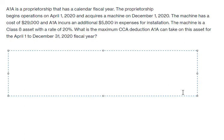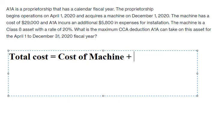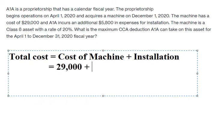The first thing we need to find is the total cost. That should be the cost of the machine plus installation. So we have $29,000 plus $5,800, which gives us $34,800.